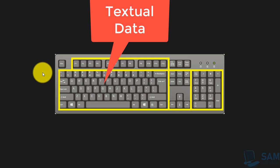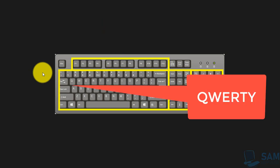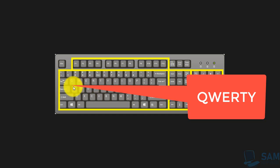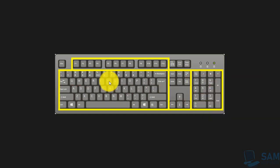We use the keyboard to enter textual data — anything that can be typed with the help of keys on the face of the keyboard. In front of your screens right now, a traditional keyboard is being displayed. Although the keyboard of a laptop is a bit different, we generally call a traditional keyboard a QWERTY keyboard because of the sequence of the first five keys in the alphanumeric keypad portion: Q, W, E, R, T, Y.